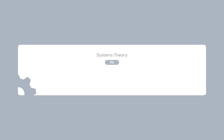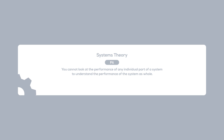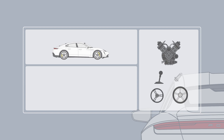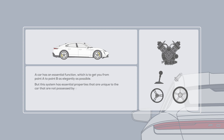But what does fit mean? Fit is a systems theory principle that states that you cannot look at the performance of any individual part of a system to understand the performance of the system as a whole. An easy example to understand is that of a car — a system with an essential function to get you from point A to B as elegantly as possible, with properties unique to the car not possessed by any of its individual parts.